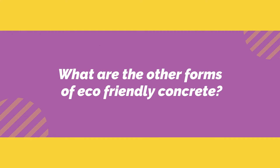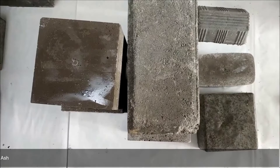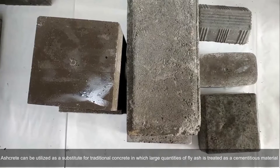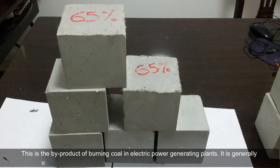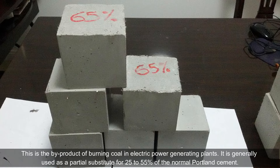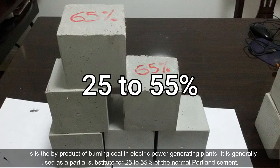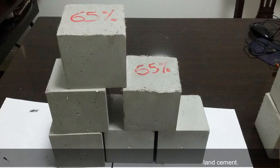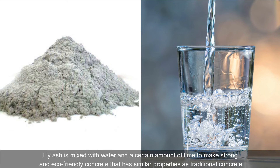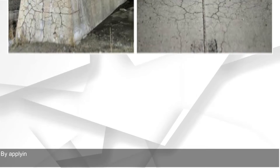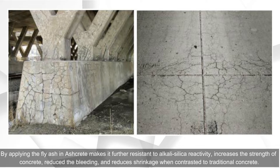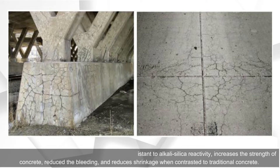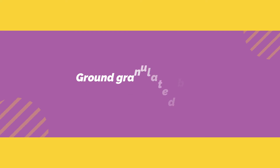What are the other forms of eco-friendly concrete? Ash Crete: Ash Crete can be utilized as a substitute for traditional concrete in which large quantities of fly ash are treated as a cementitious material. It is a byproduct of burning coal in electric power generating plants, generally used as a partial substitute for 25 to 55% of normal Portland cement. Fly ash mixed with water and lime makes strong, eco-friendly concrete resistant to alkali-silica reactivity, increases strength, reduces bleeding, and reduces shrinkage compared to traditional concrete.